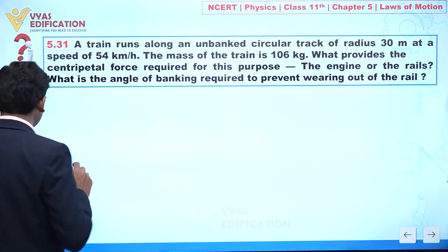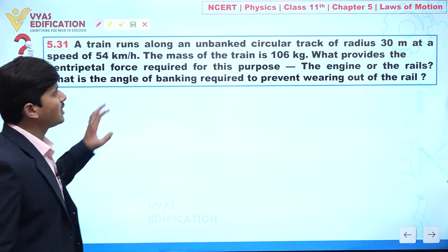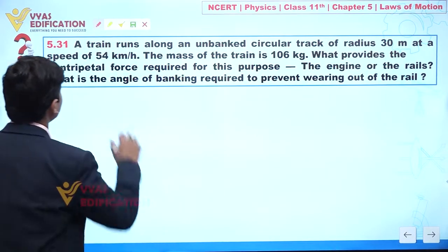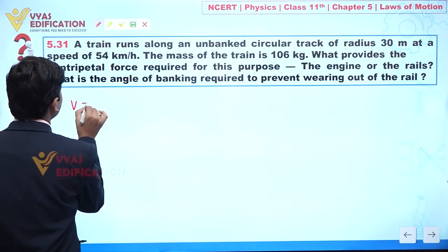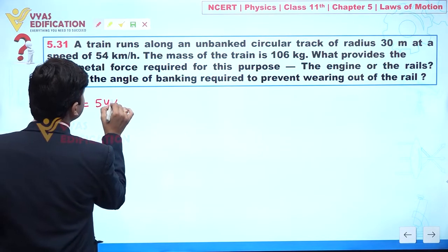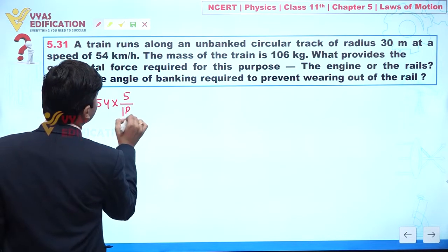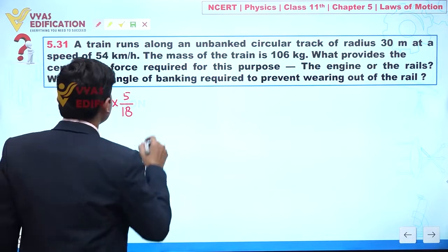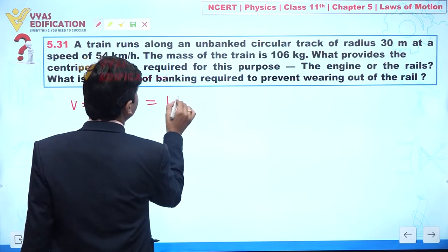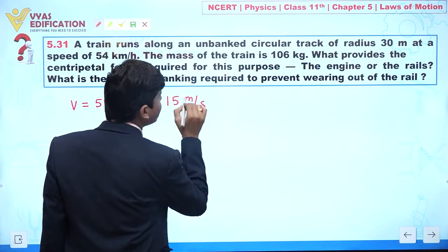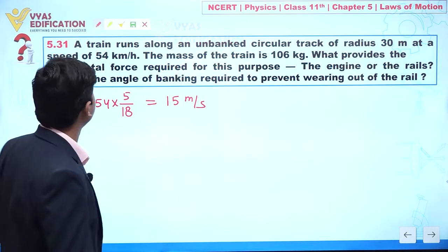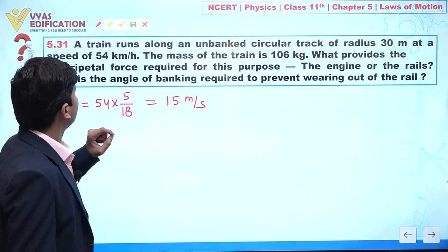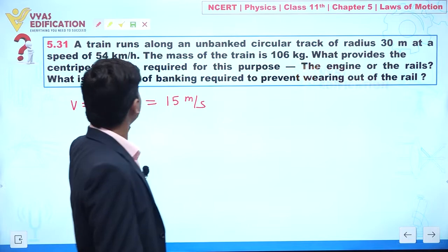Let us try to understand. The speed of the train is given to you as 54 kilometers per hour, so I can write this as 54 multiplied by 5 by 18. This is equal to 15 meters per second. This is the speed of the train.